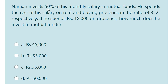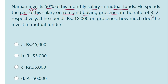Naman invests 50% of his monthly salary in mutual funds. He spends the rest of his salary — that other 50% — on rent and buying groceries in the ratio 3 to 2 respectively. If he spends 18,000 on groceries, how much does he invest in mutual funds? This is the question.